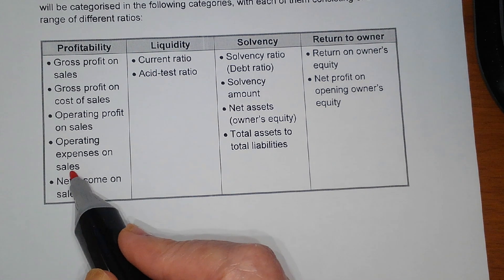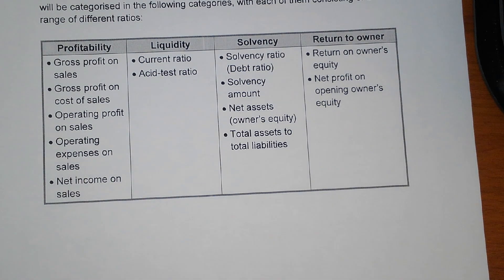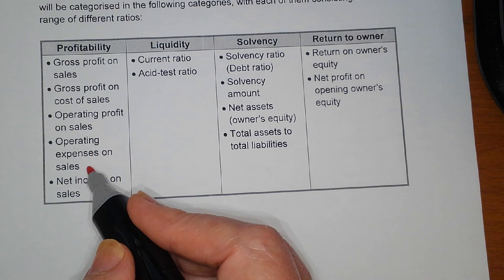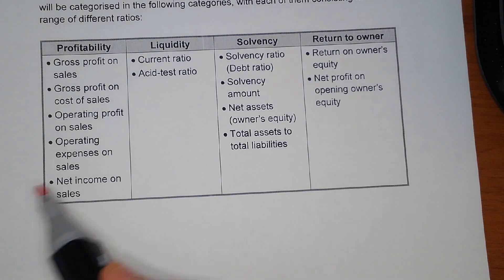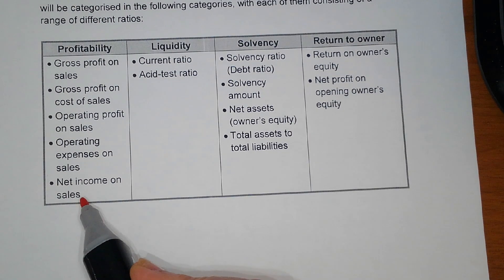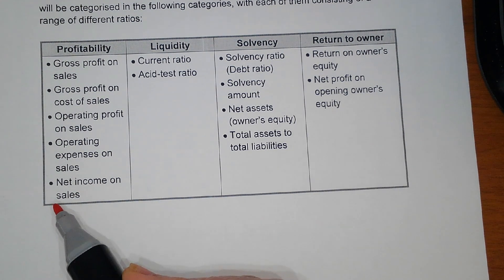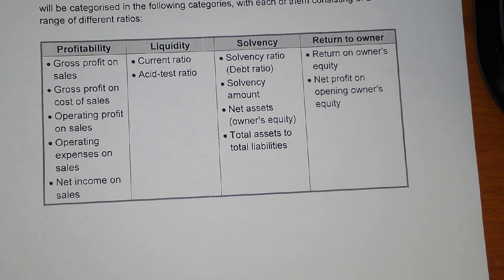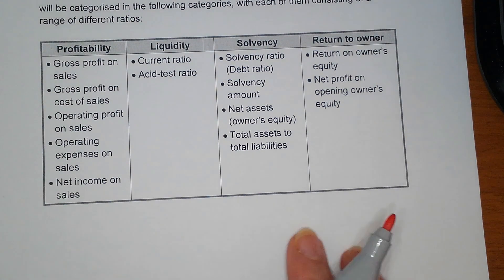For operating expenses on sales, we take operating expenses divided by sales times one hundred — this tells us what percentage of total sales was spent on expenses, so we can see where we can reduce expenses to increase profit. The net profit is the final profit in the income statement, showing the actual profit percentage made on total sales after all income and expenses have been taken into account.